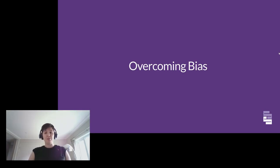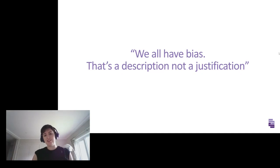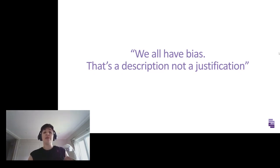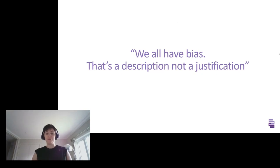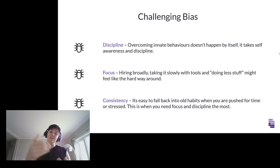So how do we overcome these biases? We all have biases — but it's a description, not a justification. Just because we have a bias doesn't mean it's acceptable. Your job is to spot which biases you have and how they're affecting the effectiveness of your application security. We challenge them with discipline: overcoming innate behaviours doesn't happen by itself. It takes self-awareness and discipline — you need to answer our self-assessment questions, acknowledge you have a problem, and commit to doing something about it.